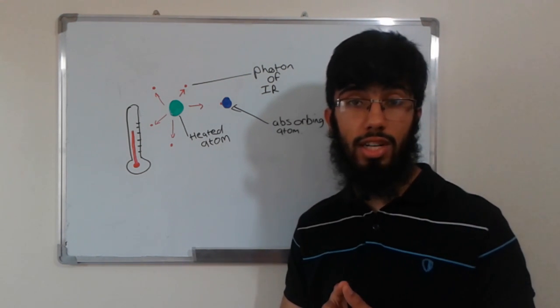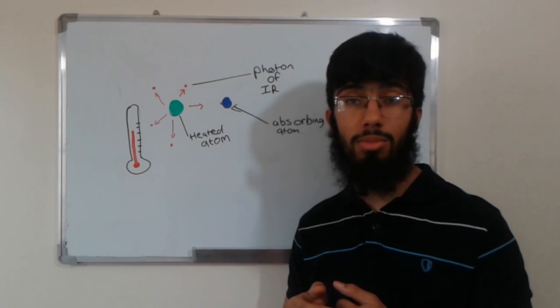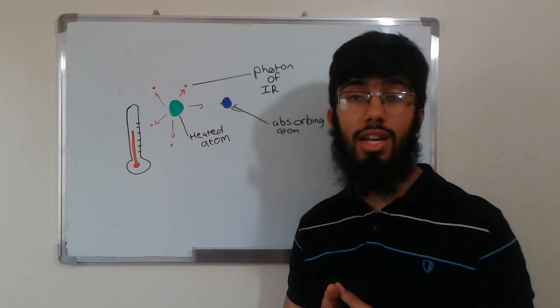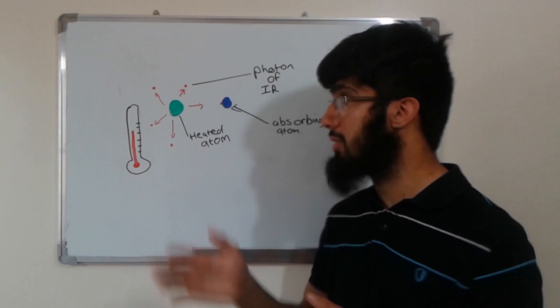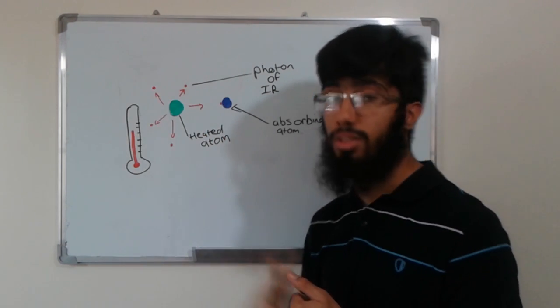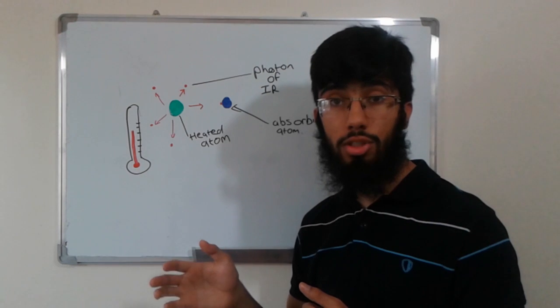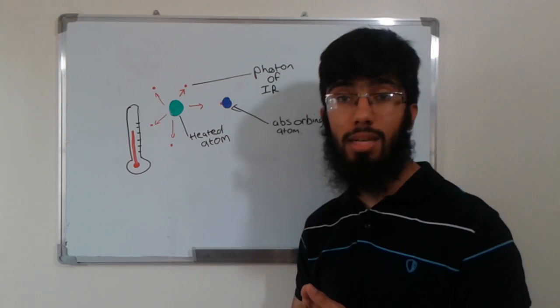So how are these photons released? They are released when electrons within heated atoms change in energy levels. This gives out some photons. The photons can be absorbed by nearby atoms or can go on and travel. When absorbed, some of the energy within them is transferred to the atom, heating them up as well.